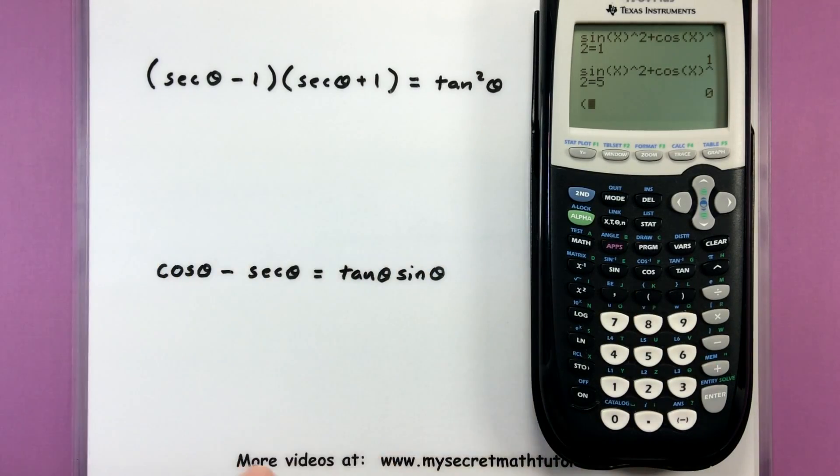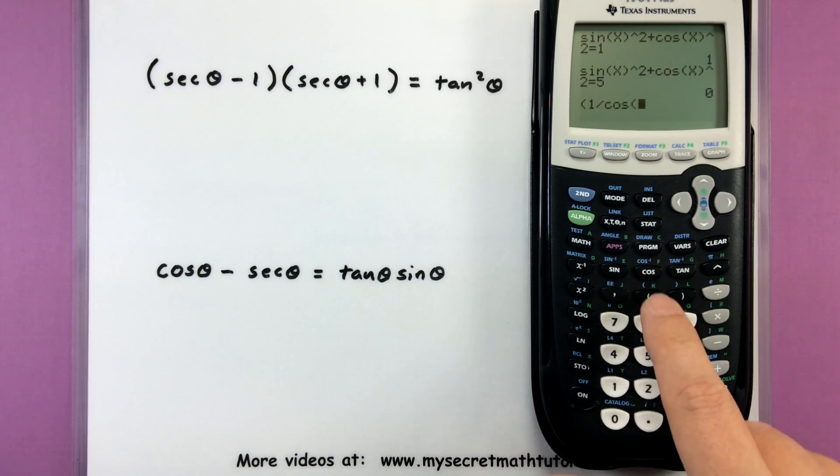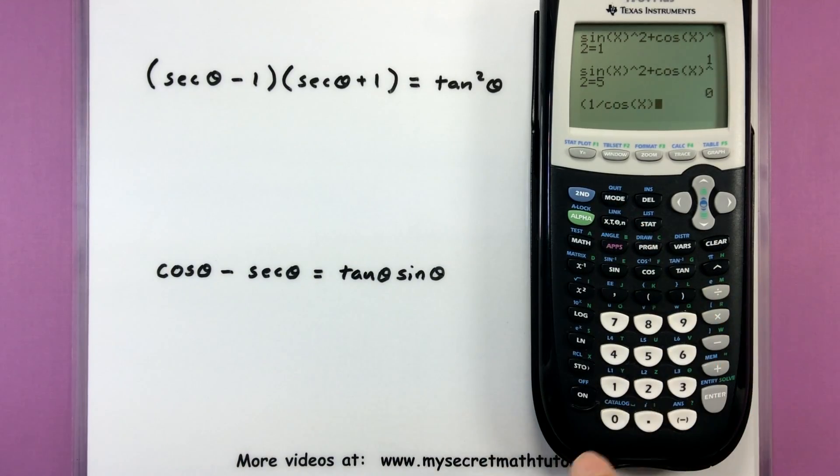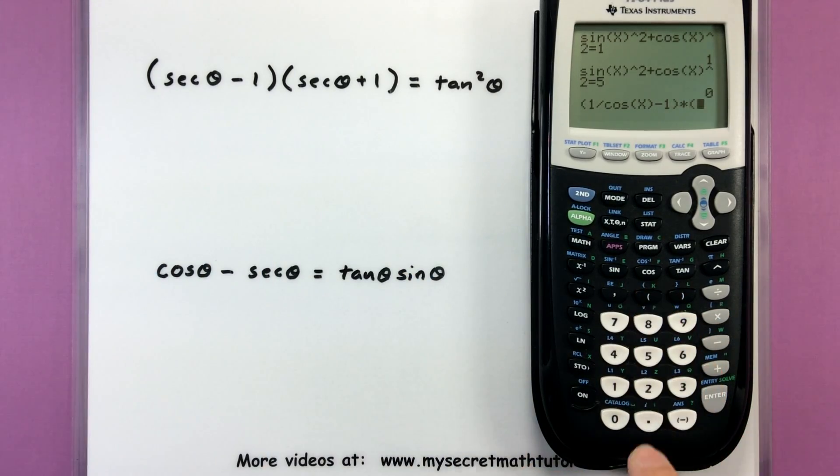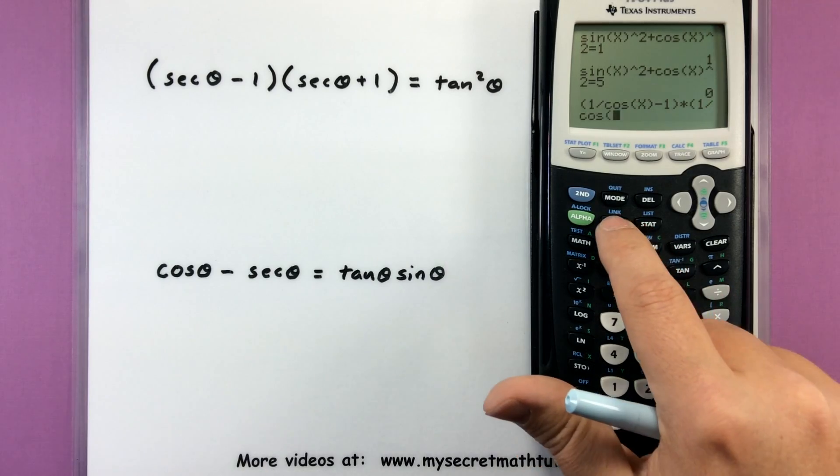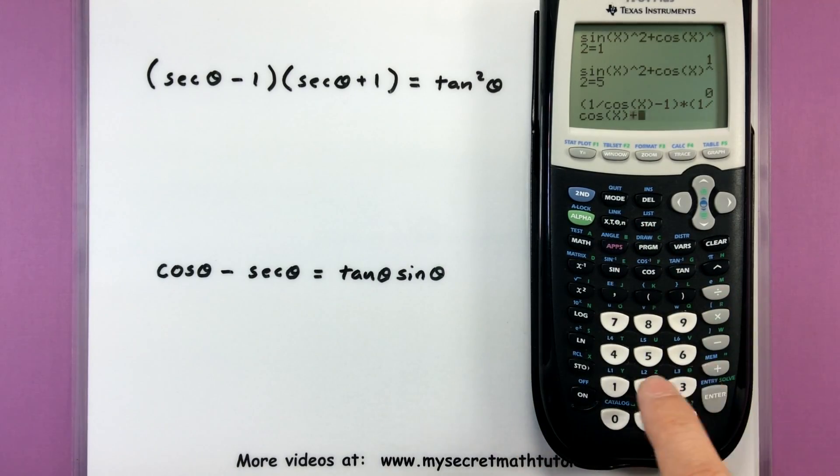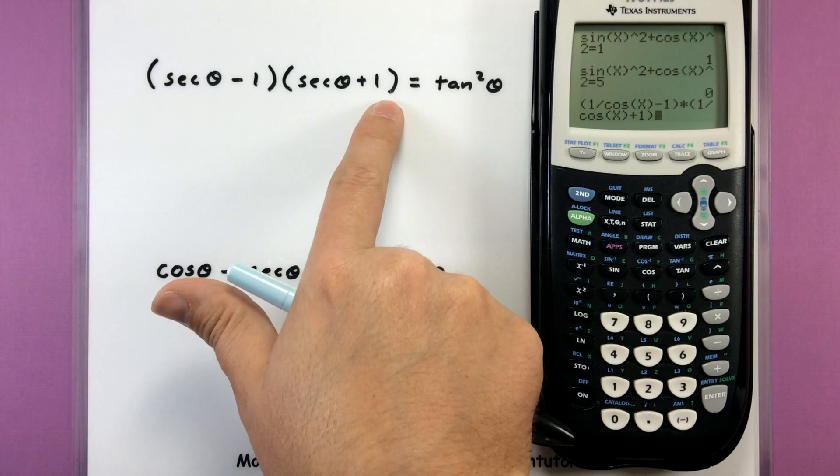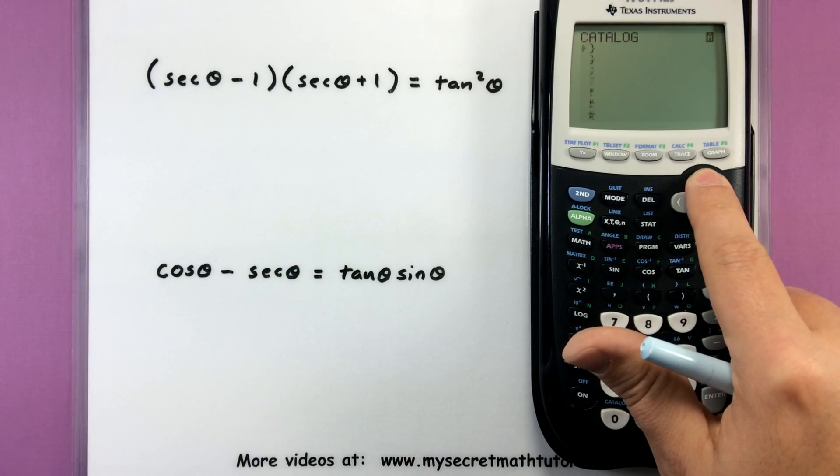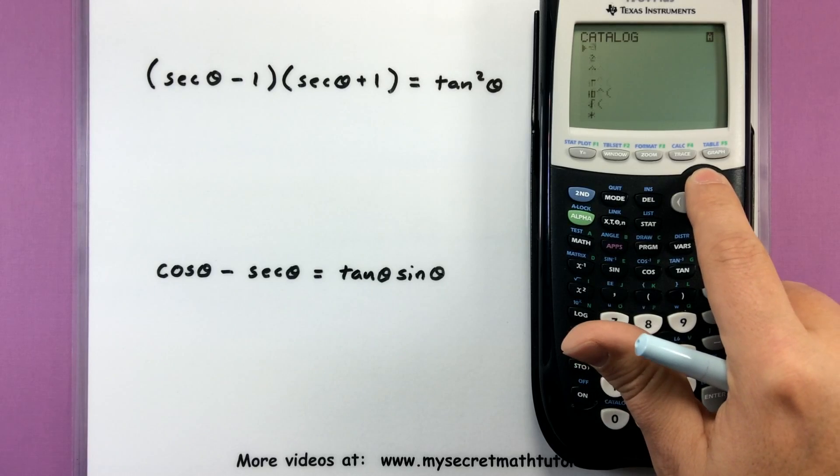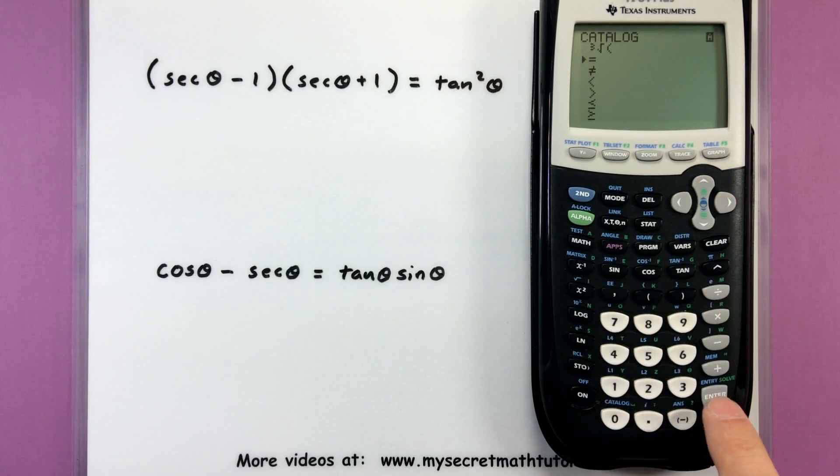Let's go ahead and start over here. So for a secant, I have one divided by cosine of x minus one, close parentheses, that takes care of all that, multiplied by one divided by cosine of x plus one, close parentheses, so that takes care of all of that. Into my catalog, find my equal sign.